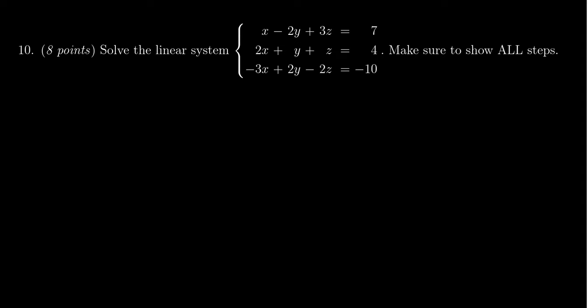I would begin by writing the augmented matrix: 1, -2, 3, 7, 2, 1, 1, 4, -3, 2, -2, and -10.